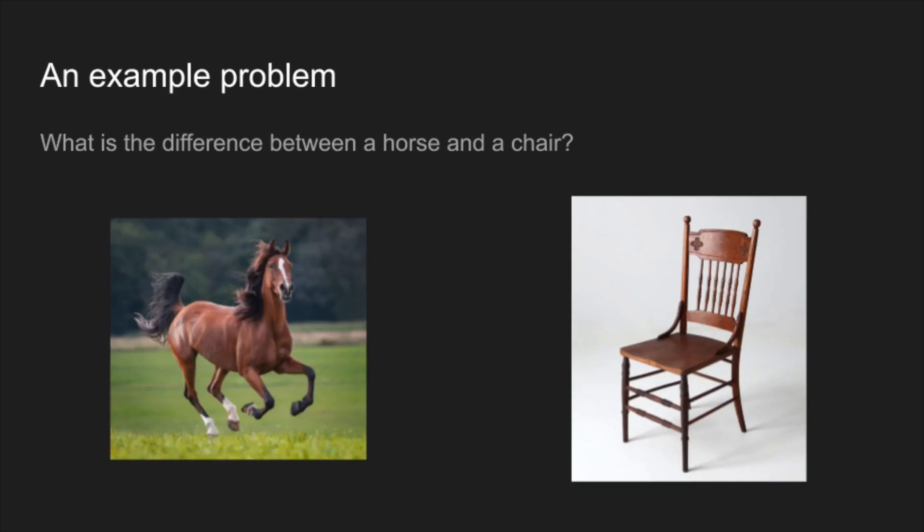Often our goal is to have machines understand semantic information — things that humans can understand easily. For example: what is the difference between a horse and a chair? They're both brown, you can sit on both of them, they both have four legs. If you were a machine and you knew nothing about the world, how would you tell the difference? That is one of the sorts of questions we would solve with machine learning.